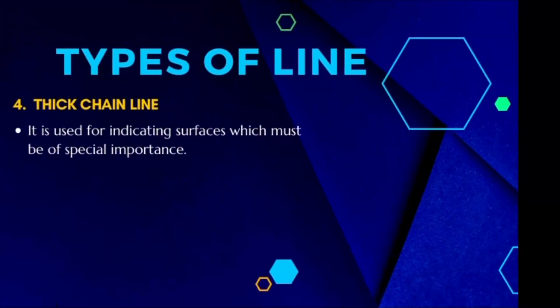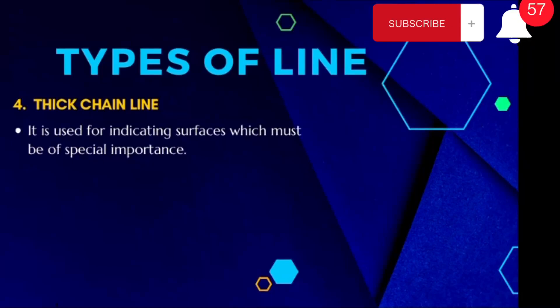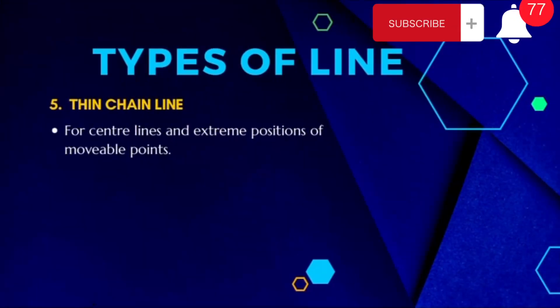Next on the list is the thick chain line. The thick chain line is used to indicate surfaces that are of special importance. Whenever you want to lay emphasis on an object, we make use of the thick chain line — it is a special line used for special purposes.